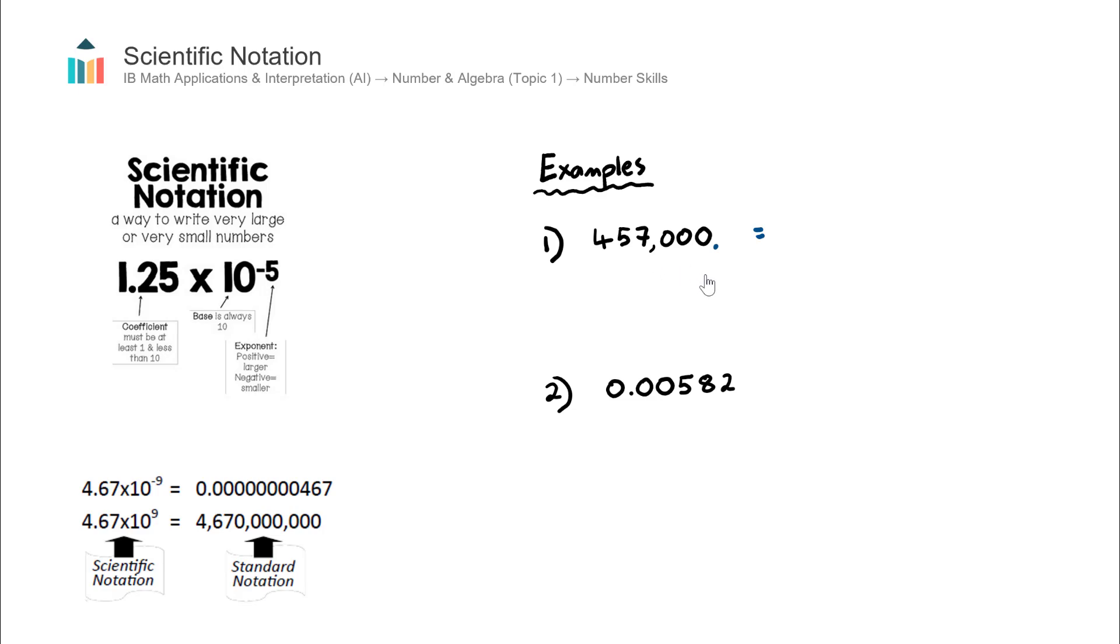The decimal point needs to move once, twice, 3, 4, 5 times. So just remember that number, 5 times. So this number will become 4.57.